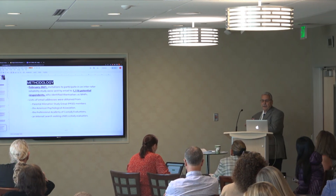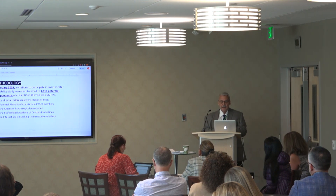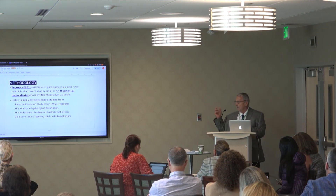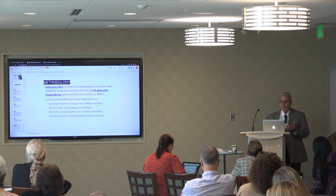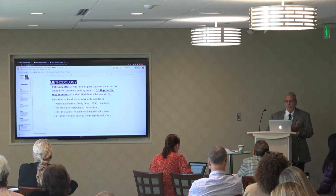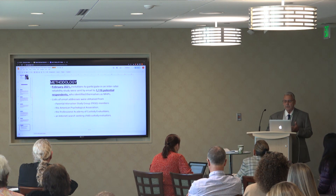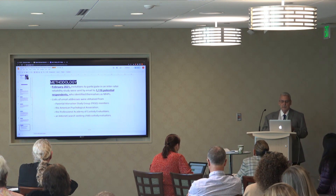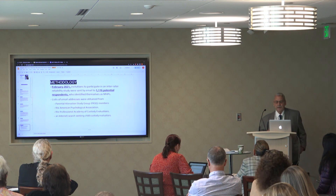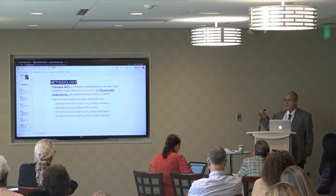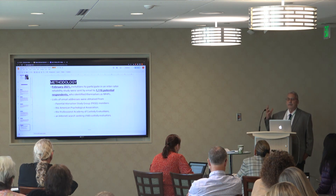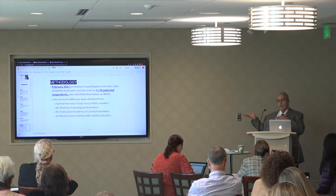On my study, I began in February and sent out a little over 1,116 emails to potential respondents. Those respondents came from the PASG group, the American Psychological Association, the Professional Academy of Custody Evaluators, and internet searches for child custody evaluators. When I came back to do my second round of emails, the number had reduced to 739 — that reduction was because of bad email addresses.